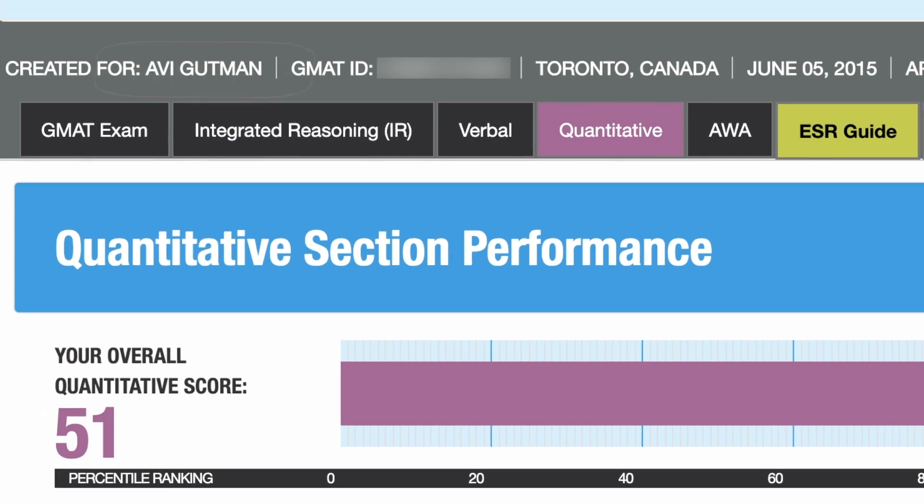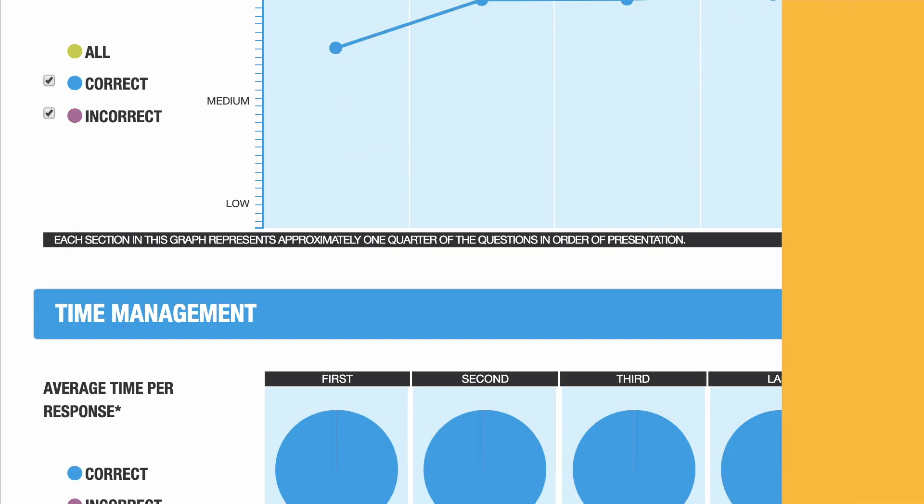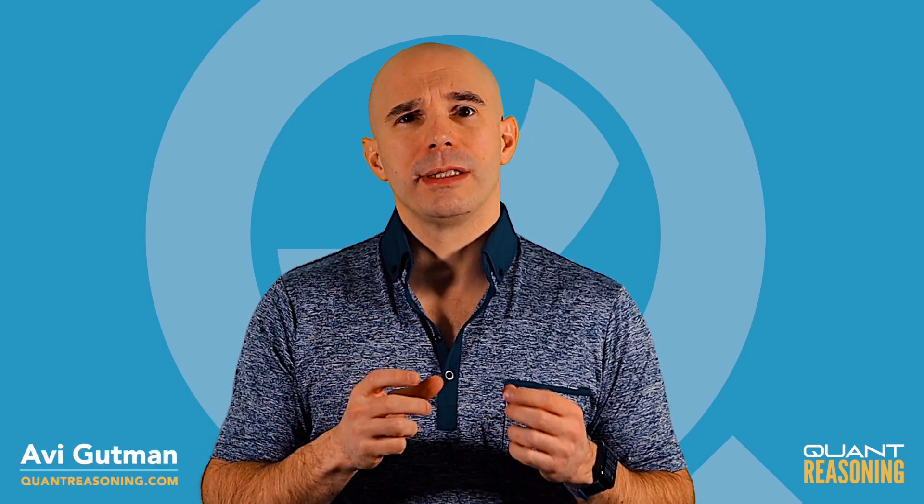Let's run the intro and maybe you can pause the video here and try to do the same thing for the second term. So for the second term, you'll end up with a numerator of 1 minus 9 times 10 to the power of negative 8 over 1 plus 3 times 10 to the negative 4.